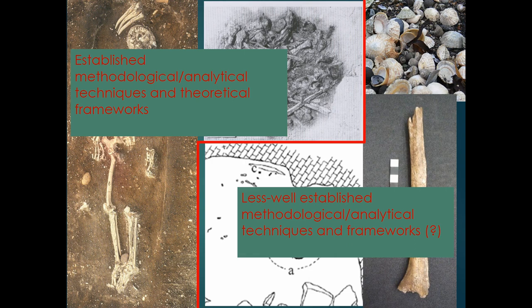Some of those frameworks can still apply to disarticulated material, but it's not always as easy to construct those aspects of individual identity that people tend to focus on. The methodologies for looking at this material are less well established, and disarticulated material is often lumped together when it might actually represent lots of different practices. There are many ways a body can become disarticulated, and we need osteological analysis — taphonomic history — to determine whether it's deliberate disarticulation, secondary burial, exposure, disturbed burial, or other specific practices.